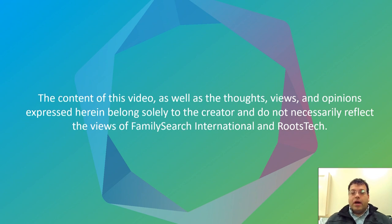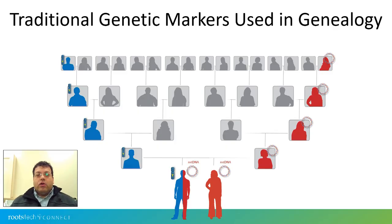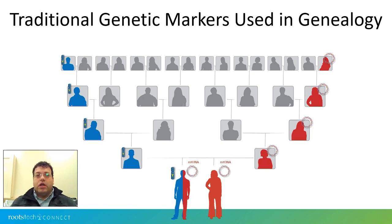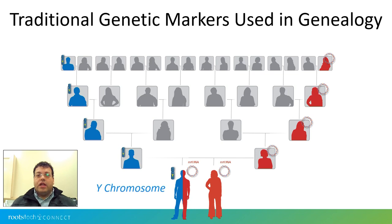Let's review the three principal markers used in genetic genealogy. You're probably all familiar with them. The first one is the Y chromosome — the DNA marker inherited from the paternal line. It comes from father to son, and only males carry it.